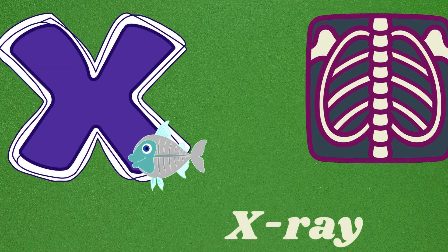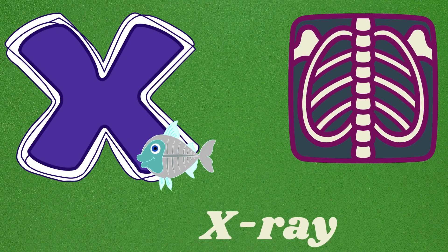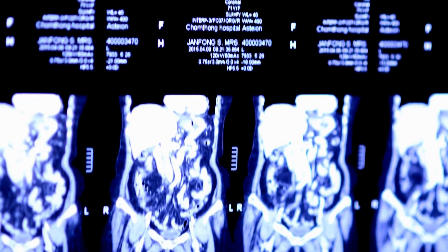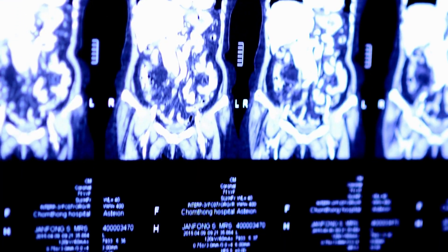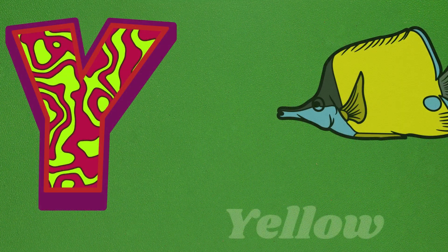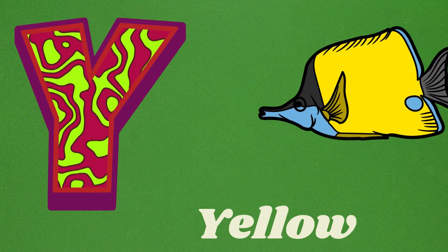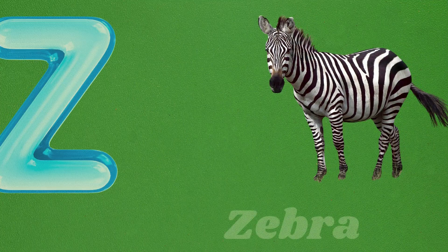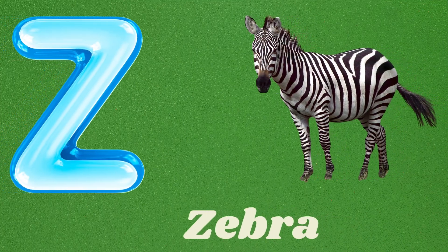X is for x-ray. X-ray, x-ray. Y is for yellow. Yellow. Yellow. Z is for zebra. Z, Z, zebra.